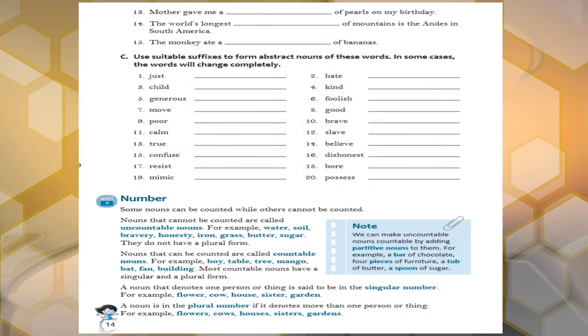So here, use suitable suffixes from abstract noun. Like children, just, justice, hate, hatred, child, childhood, like this.